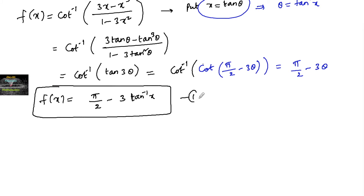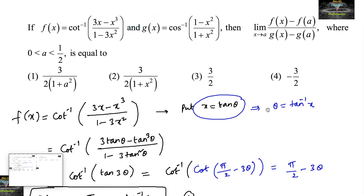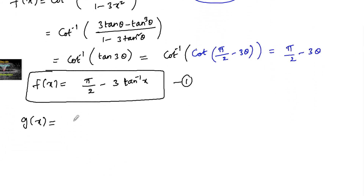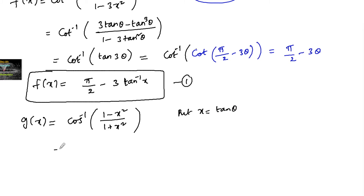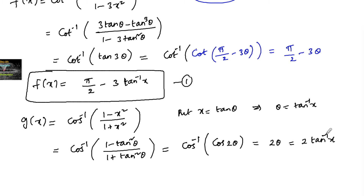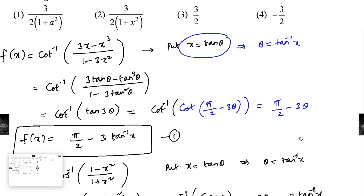Next, g(x) = cos⁻¹((1 - x²)/(1 + x²)). Again put x = tan θ. The expression (1 - tan²θ)/(1 + tan²θ) is the formula for cos 2θ, so g(x) = cos⁻¹(cos 2θ) = 2θ = 2tan⁻¹(x). So g(x) = 2tan⁻¹(x).